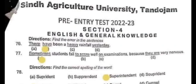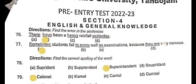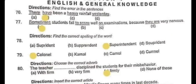Welcome back to Rethi Educational Academy YouTube channel. This is the fourth part of the pre-entry test paper for Sindh Agricultural University Tandojam, held in 2023. In previous videos, I had already shared questions related to Section 1 Biology, Section 2 Chemistry, and Section 3 Physics. In this video, I am going to share about English and general knowledge. Question 76 – Corrections, find the error in the sentence: 'There have been a heavy rainfall yesterday.' The correct answer is B. Question 77: Sometimes students fail to score well in examinations because they are very nervous. The correct answer is 'sometimes'.